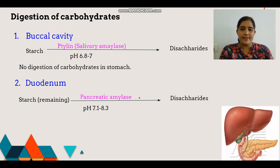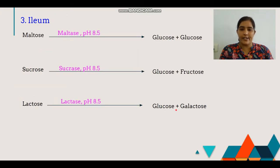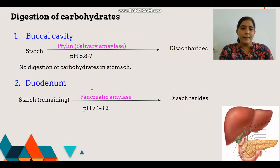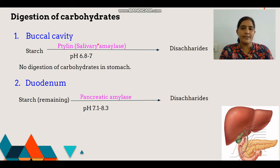Pancreatic amylase enzyme, which works at a pH of 7.1 to 8.3, converts the remaining starch into disaccharides. This enzyme works in an alkaline medium. The alkaline pH is due to bile juice secretion. About 30 to 50% of starch is digested in the buccal cavity, and the remaining starch is digested in the small intestine.